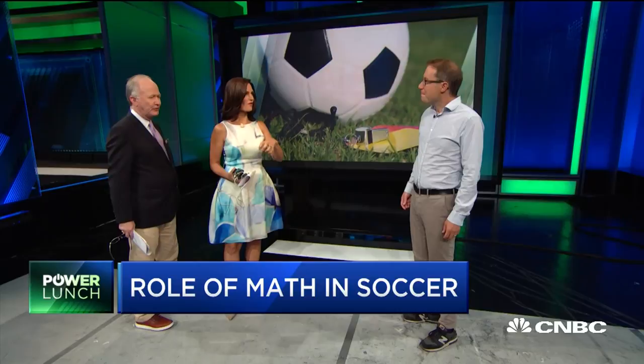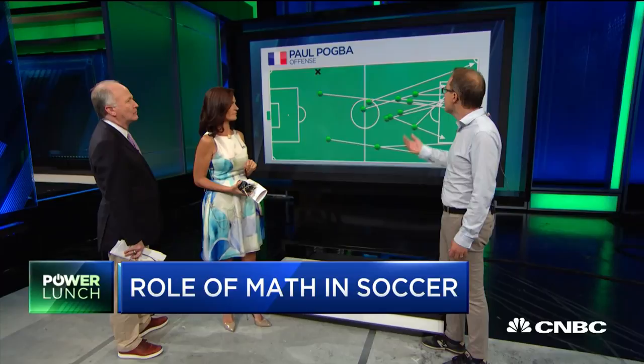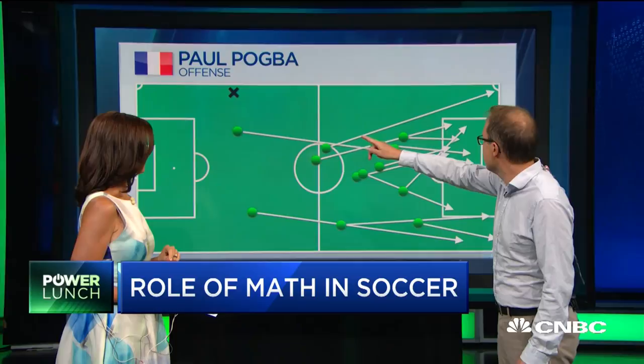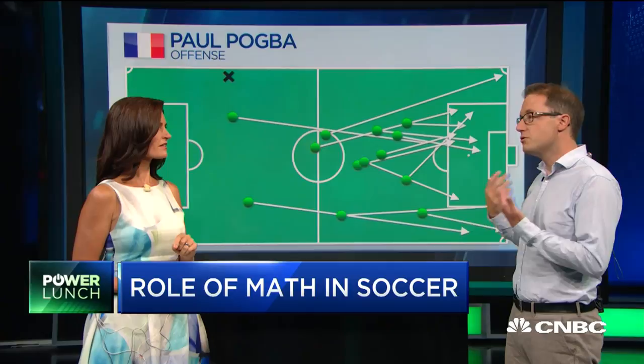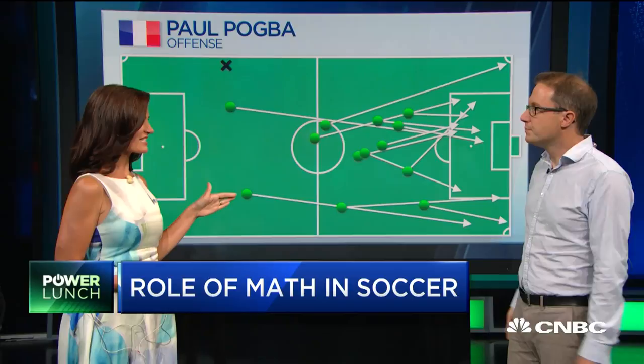This is Paul Pogba — he plays for France. What you can get an idea of here is the important passes that he's made. Each of these dots is the origin of the pass and the endpoint is where he's made the passes to. We use an algorithm — machine learning — to validate and find out what the important passes are.